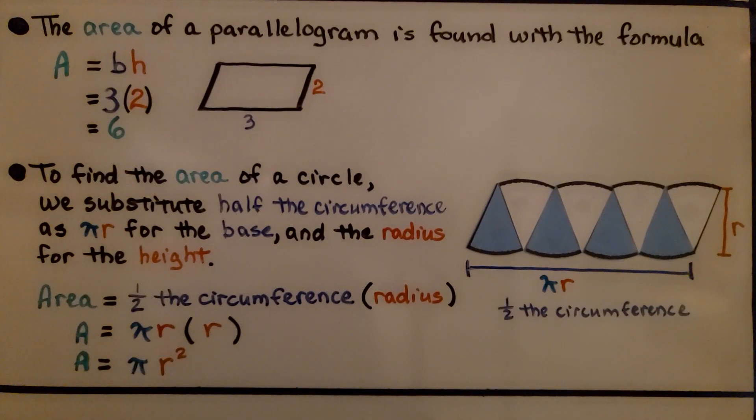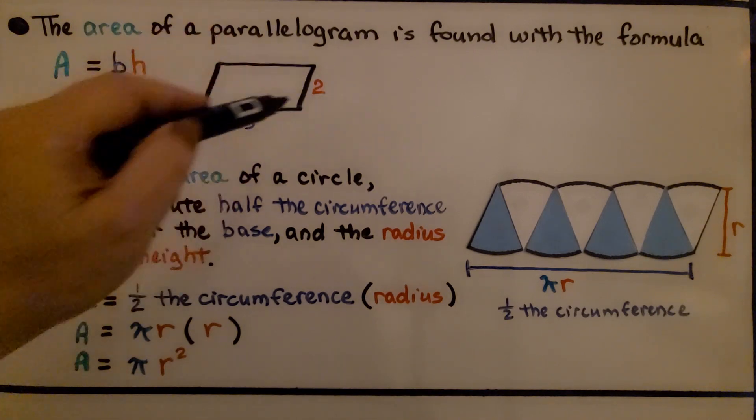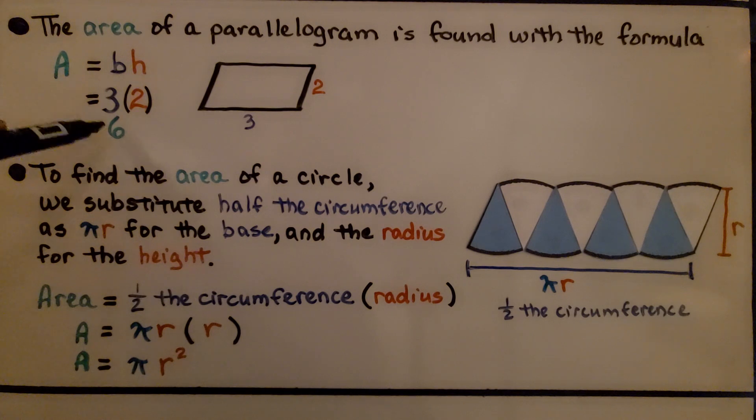Now do you remember the area of a parallelogram is found with the formula a equals bh, for area is equal to the base times the height? The base is three, and the height is two. We do three times two.